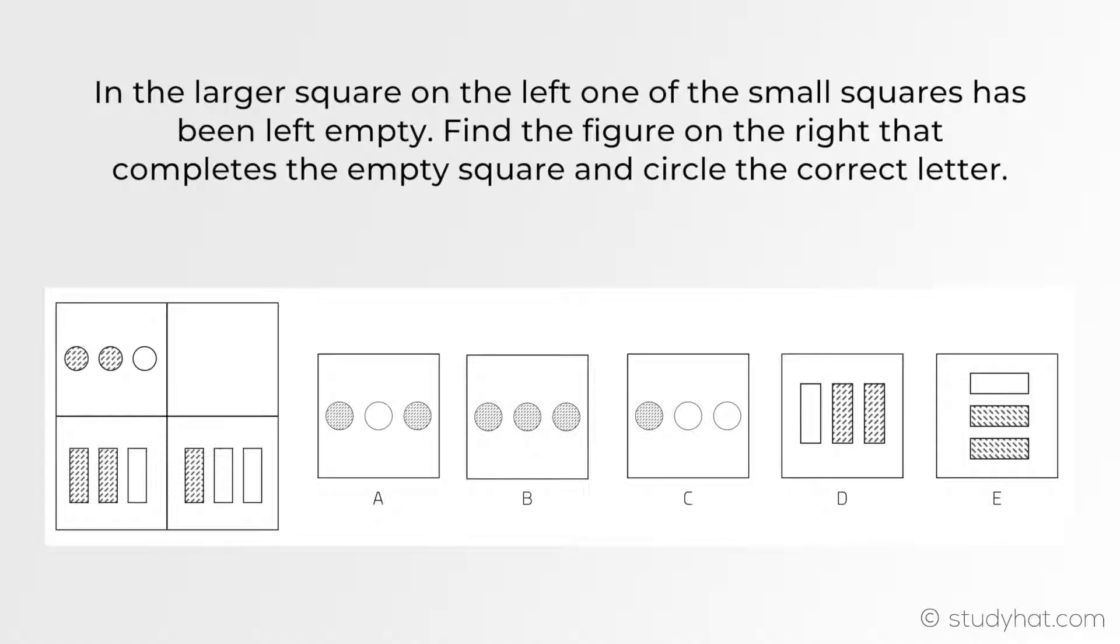Now all we need to do is apply that pattern to the top figure. So once again, the first grid has two shaded circles, therefore meaning the grid on the right will only have one shaded circle. It can't be A since that has two shaded circles, and B has three, so those two can be eliminated. This leaves us with C as the correct answer, since it's the only grid with one shaded circle.